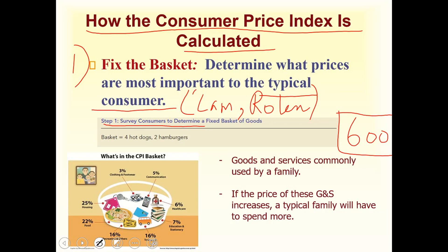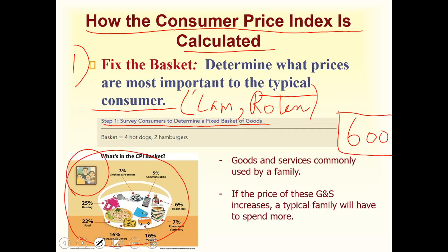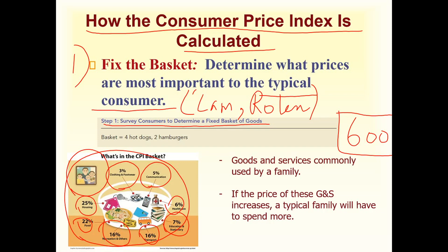Once we know what goods consumers use in their daily life, a basket is fixed. Here is an example of what a typical consumer's basket looks like: a normal family spends 3% on clothing and footwear, 5% on communication, 6% on healthcare, 7% on education and stationery, 22% on food, 25% on housing, 16% on transport, and 16% on recreation and others.